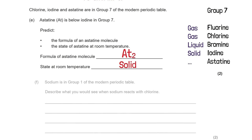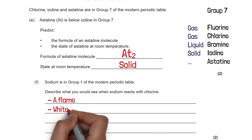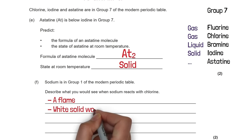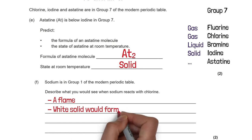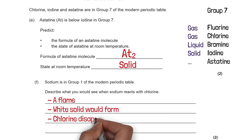Caesium is in group 1 of the modern periodic table. Describe what you would see when sodium reacts with chlorine. Group 1 means it's very reactive, so we're going to see a flame, a white solid would form, and the chlorine would disappear.